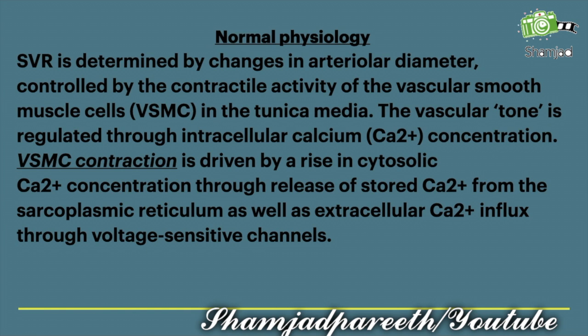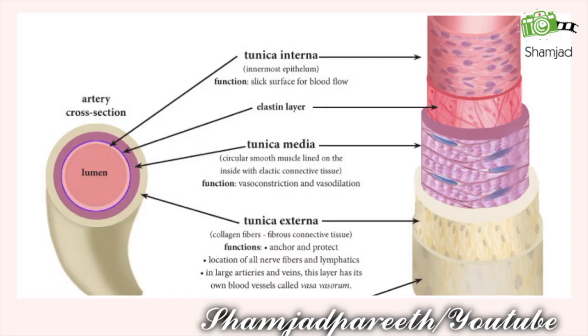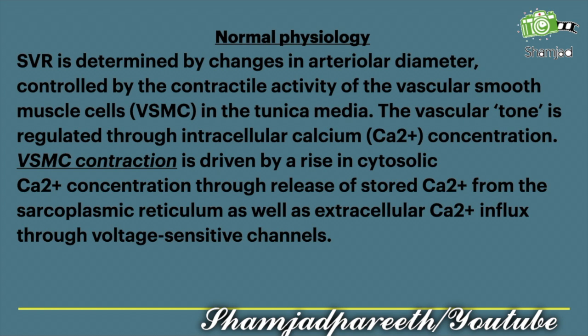The systemic vascular resistance is determined by changes in the arterial diameter, controlled by the contractile activity of vascular smooth muscle cells in the tunica media — the third structure in the arterial wall cross section. Vascular tone is regulated through intracellular calcium ion concentration. Vascular smooth muscle contraction is driven by a rise in cytosolic calcium ion concentration through release of stored calcium from the sarcoplasmic reticulum, as well as extracellular calcium influx through voltage-sensitive channels.